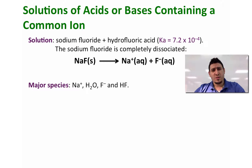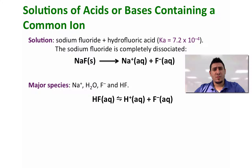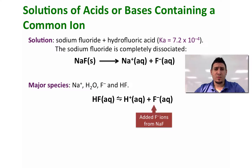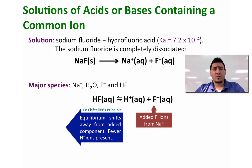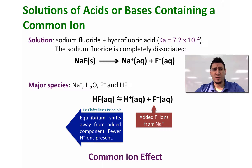Now what are the major species in this solution? We have the sodium ion, water, and the fluoride, and since hydrofluoric acid is a weak acid it will not completely dissociate, so the major species is the acid itself. If we add fluoride coming from sodium fluoride, the equilibrium will shift to the left according to Le Chatelier's principle to minimize the concentration of F minus added, making more HF. This is called the common ion effect, where fluoride is a common ion between sodium fluoride and hydrogen fluoride.